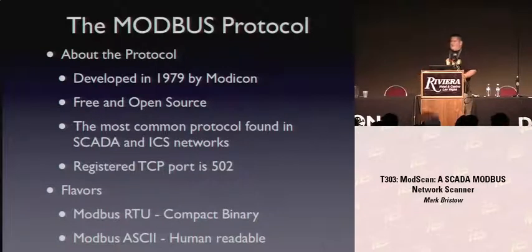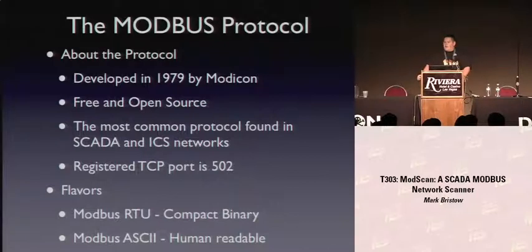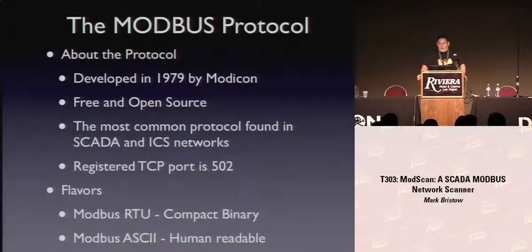Depending on who you ask, it's the most common protocol out there - I'd say that's probably a bit of an overstatement, but almost every major control system network I've seen has at least some element of ModBus running on it, because it's so old and well-established. ModBus TCP is registered on port 502. It comes in two flavors: RTU, which is binary, and ModBus ASCII. They're basically the same thing except for the compression format and they use different CRC versus LRC checks.